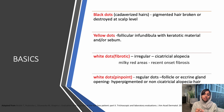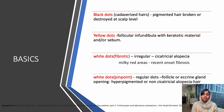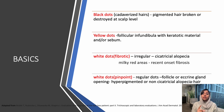The next structure is white dots. White dots can be fibrotic or pinpoint. The fibrotic white dots are irregular and seen in cicatricial alopecia. Whereas pinpoint white dots are very regular and seen in two scenarios: either they can be the openings of the eccrine glands, or can be empty hair follicles. These are generally seen in non-cicatricial alopecia or in early stages of cicatricial alopecia.